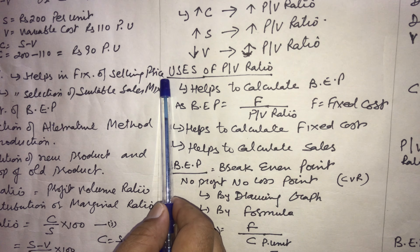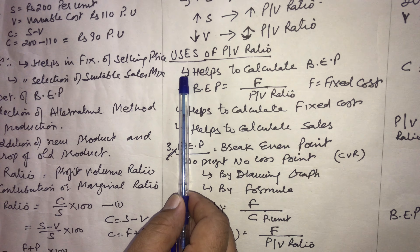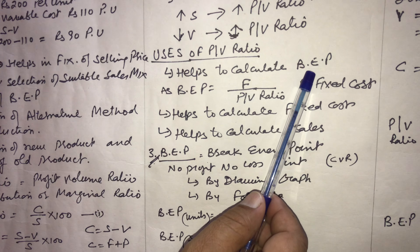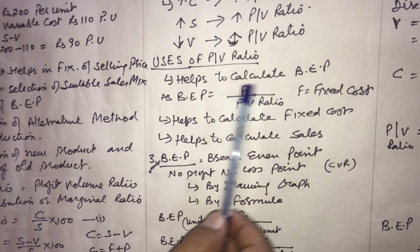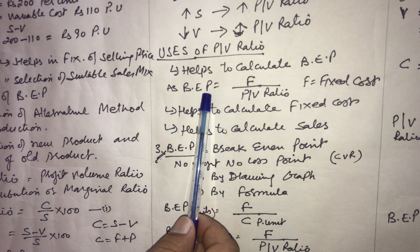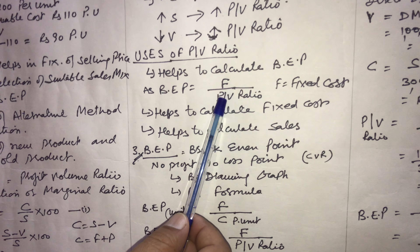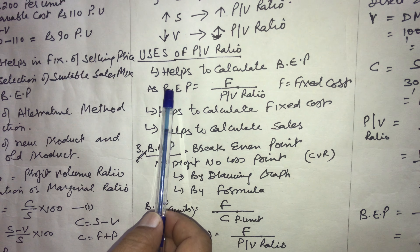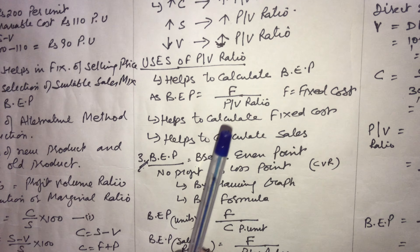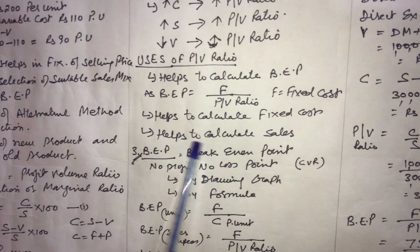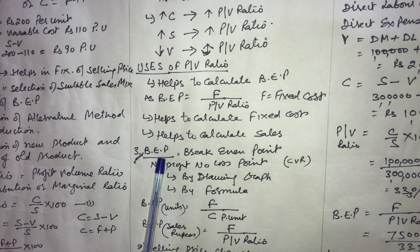Why do we calculate PV ratio? There are certain advantages. First, it helps to calculate the breakeven point — the formula for breakeven point is fixed cost upon PV ratio, so PV ratio is required. Second, it helps to calculate fixed cost. Third, it helps to calculate sales.